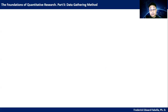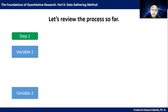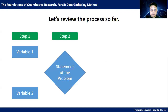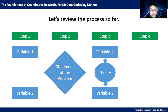Let's review the process so far. In step one, you identified the variables that you want to study — variable one and variable two. The next step was being able to state your problem, so you now have the statement of the problem. In the third step, you were able to connect your two variables using a theory. So what is step four? How to gather your data.